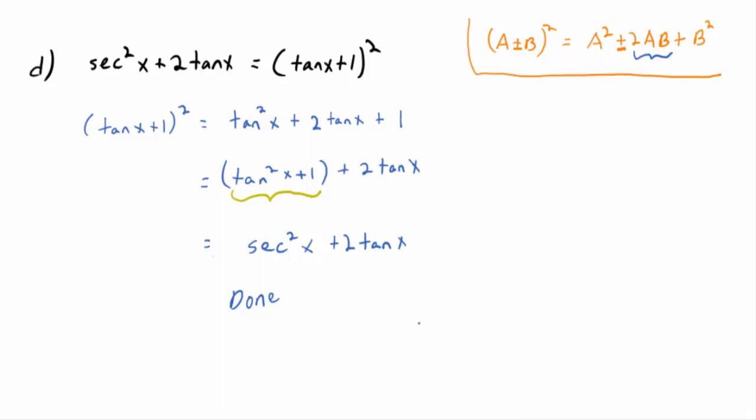The two tricks used here: first, we multiplied out a binomial-like quantity — (tangent x plus 1) squared — which is an algebraic trick. Then we made use of the Pythagorean identity tangent squared x plus 1 equals secant squared x. Two tricks in one problem.